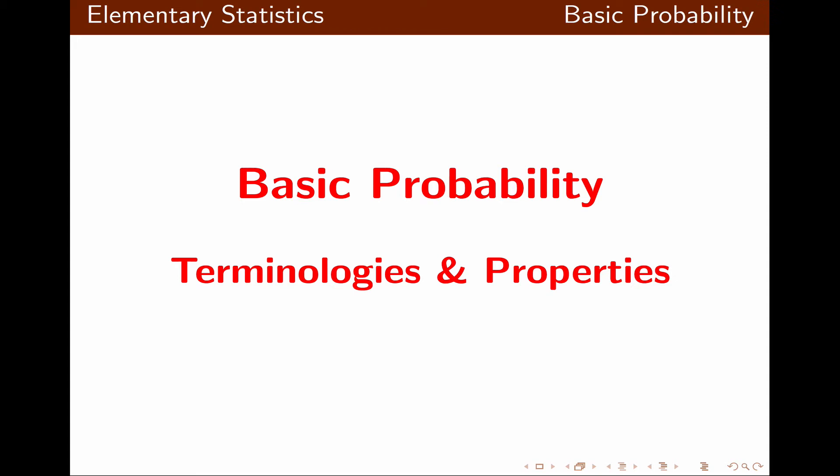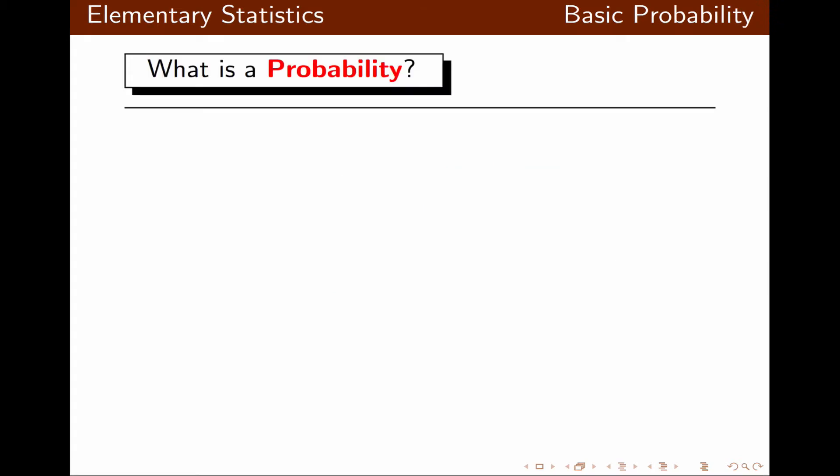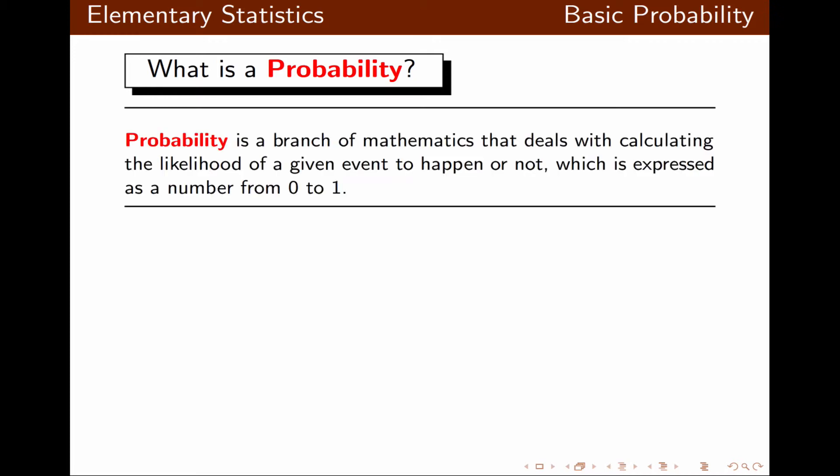In this lecture we're going to talk about basic probability terminologies and properties. First, let's take a look at what probability is. Probability is a branch of math that deals with calculating the likelihood that any given event can happen or not happen. Probability is a number that ranges from zero to one inclusive.